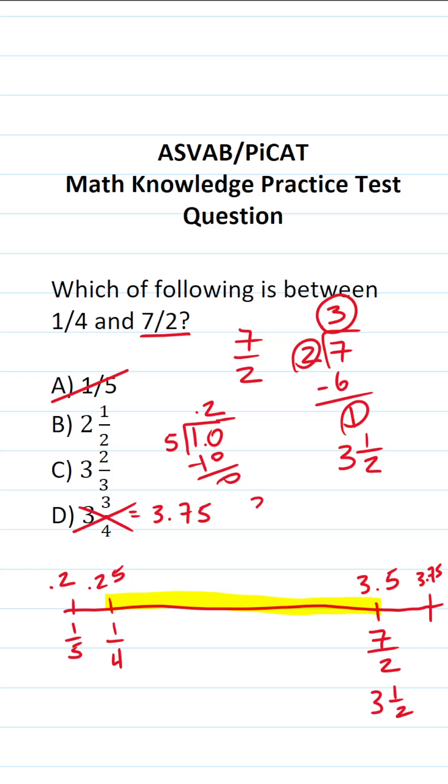What about 3 and 2/3? 3 and 2/3 is the same thing as 3.6666 repeating. We could see that that is bigger than 3.5. It's actually right here. So we know that this is bigger than 3.5 or 7/2.